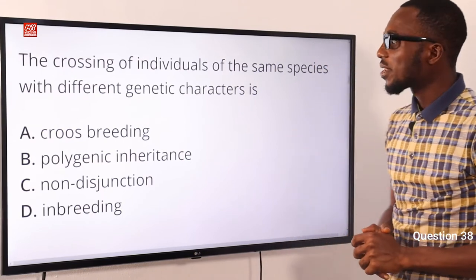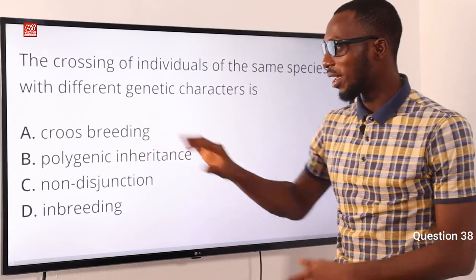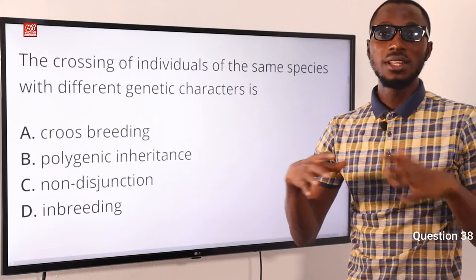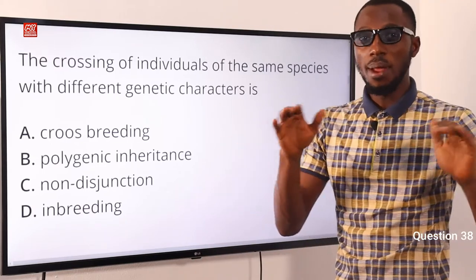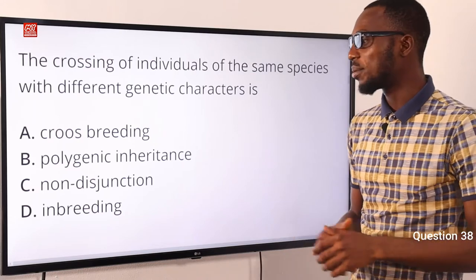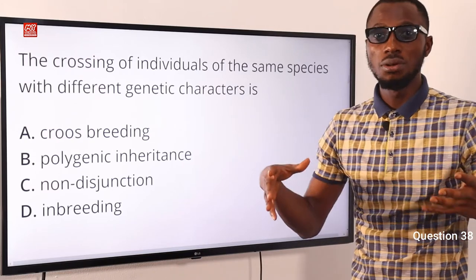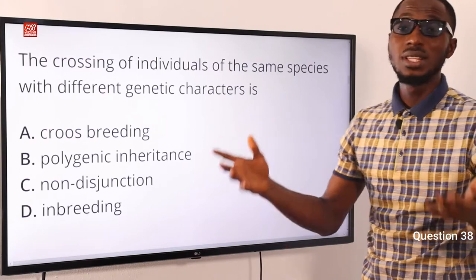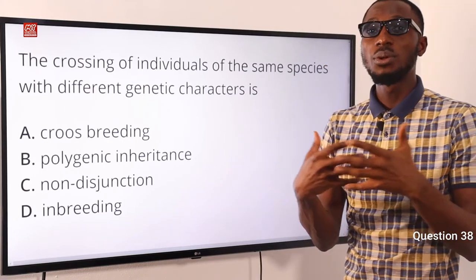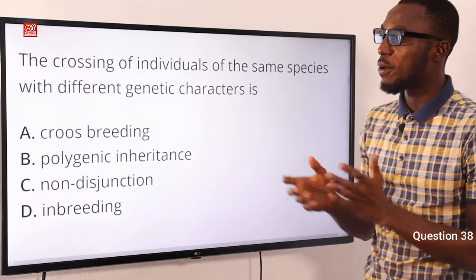Question 38. The crossing of individuals of the same species with different genetic characters — that is cross-breeding. I'm talking about polygenic inheritance, when a particular physical trait results from incomplete dominance between different genes from the parents, like height, weight, or skin color. We have non-disjunction, which is a failure of proper separation of homologous chromosomes during cell division. Then in-breeding is mating between closely related individuals to maintain a particular trait. The correct option here is option A for cross-breeding.